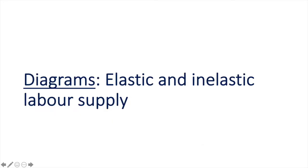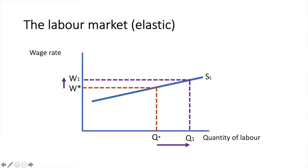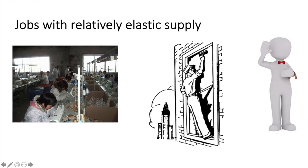Now that we have understood the factors that would cause supply to be more elastic or inelastic, let's look at the diagrams for both situations. For the labour market with elastic supply, there is likely to be a more than proportionate change in the quantity supplied of labour with respect to the proportionate change in the wage rate. This kind of labour supply curve could apply to jobs with low skills or jobs that do not require much training or education, such as factory work, window cleaners, and waiters and waitresses in restaurants or in the fast food industry.